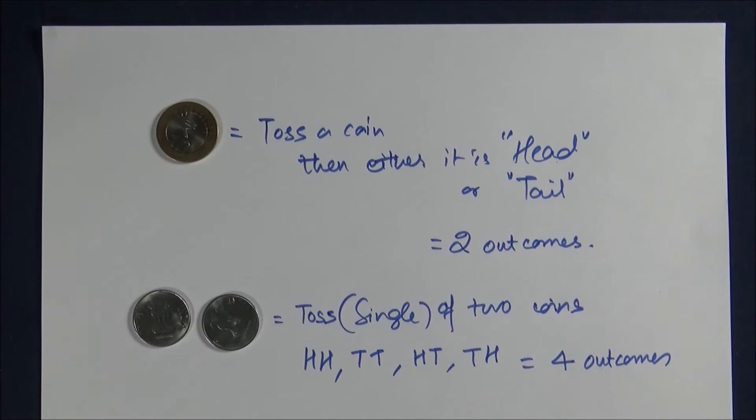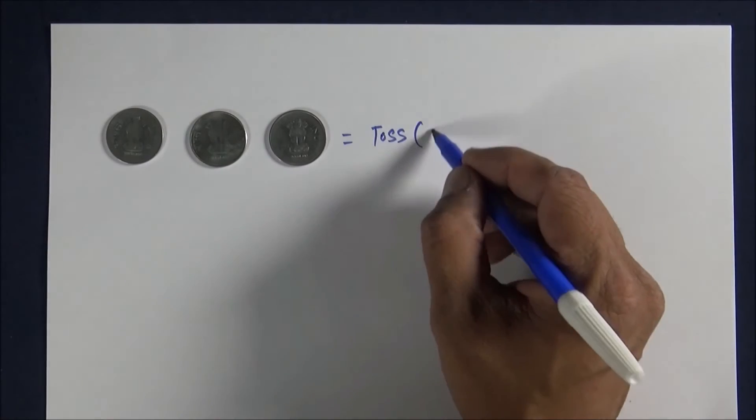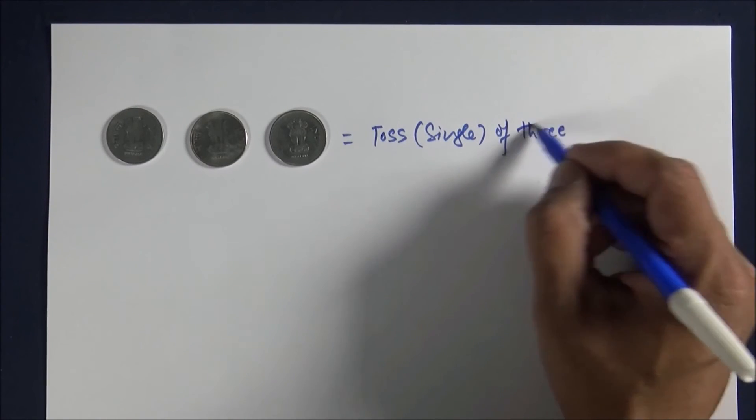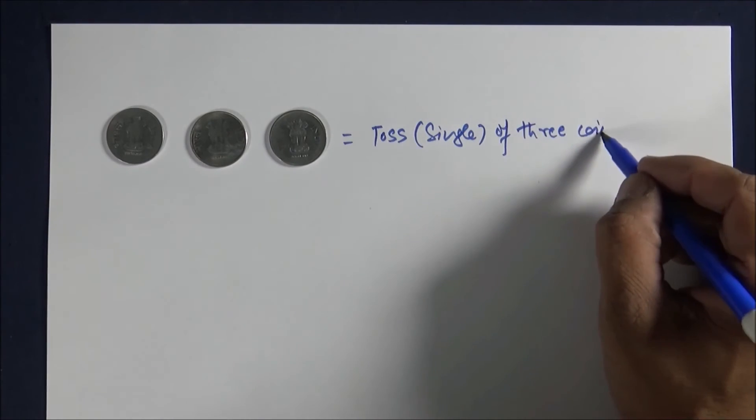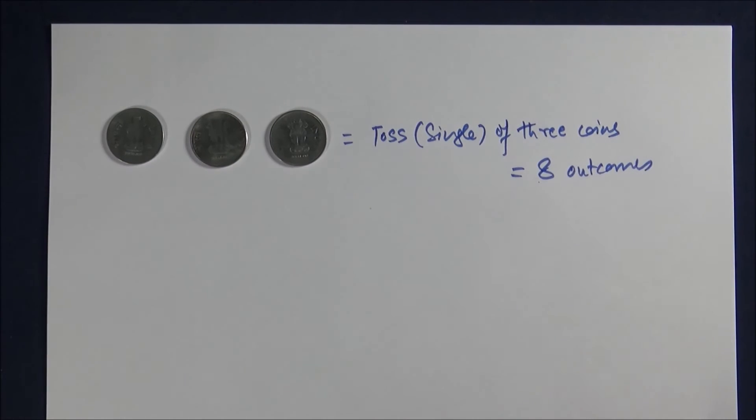You will be curious to know more. What if we have three coins? So a single toss of three coins will give you eight outcomes. How will you create eight outcomes? It could be a tedious process, but we can make it simple for you.